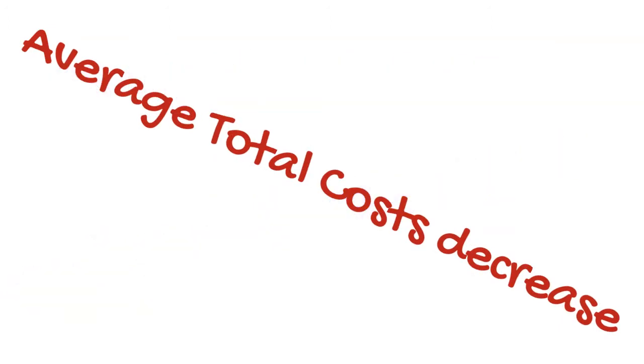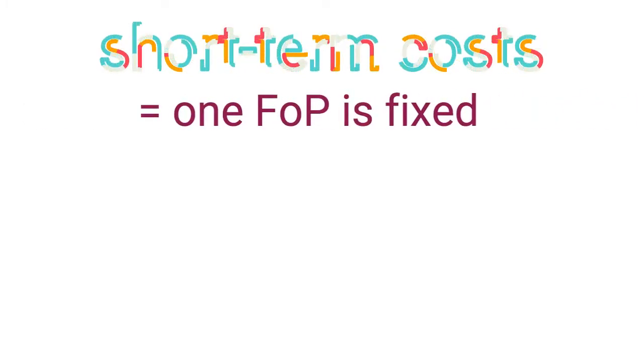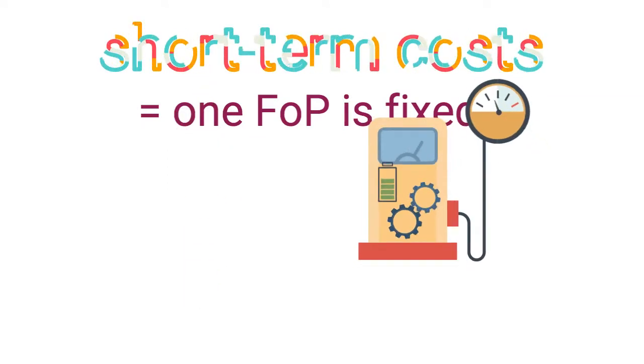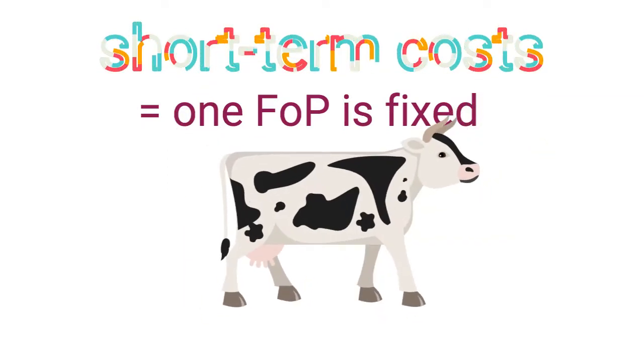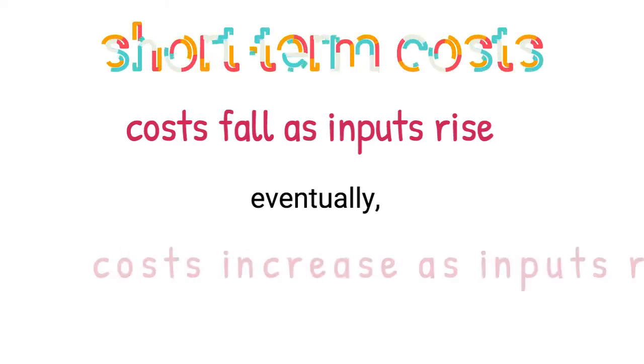One of the key assumptions of this theory is the existence of short-term and long-term cost. The short term is defined by the period of time during which at least one factor of production is fixed. For example, we could have a limited number of workers, machines, or resources. During the short term we observe that costs generally fall as we add more inputs in the production process, but at some point the costs start to rise.